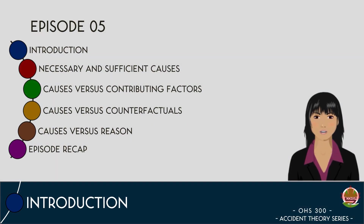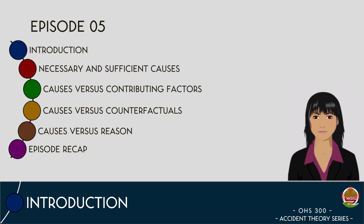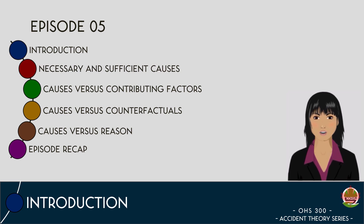Welcome to episode 5 in our accident theory series. In our last episode, we learned about causation and how it can be proven legally through investigation of who caused an incident to occur, as well as through science which determines what non-human factors caused an incident to occur. In today's episode we are going to take a more in-depth look at the different types of causes, specifically necessary and sufficient causes. We will also begin to learn about the differences between causes and contributing factors, as well as the difference between causes and counterfactuals. We will end the episode with a look at causes versus reason.